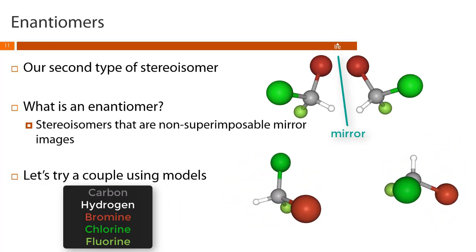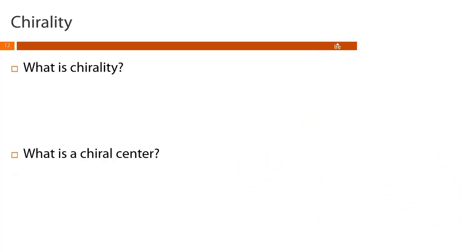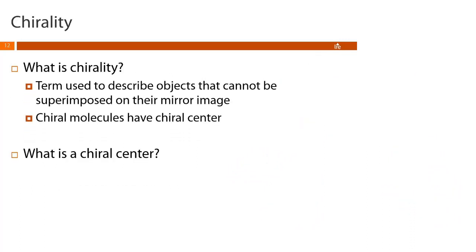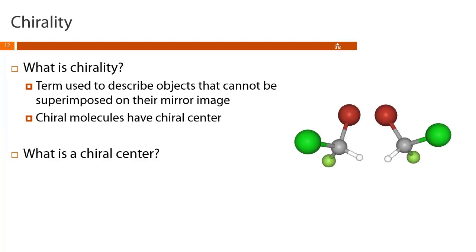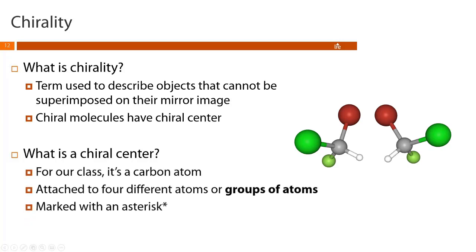That brings us to chirality — a term used to describe objects that cannot be superimposed on their mirror images. These molecules are chiral and are said to have a chiral center. For a carbon atom to be a chiral center, it must be attached to four different atoms or groups of atoms. When identifying a chiral center in a structure, mark that carbon with an asterisk.